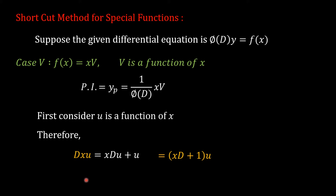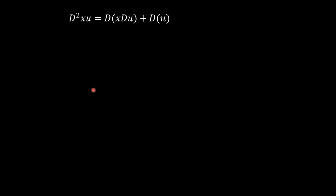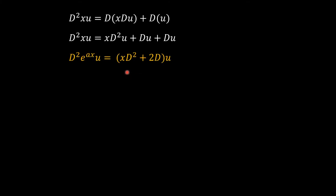We now evaluate the second-order derivative. Consider D²(xu), which equals D[D(xu)] = D[x·du + u]. Operating this operator separately on each term and applying the product rule gives x·D²u + Du + Du. Adding the last two terms, we get (xD² + 2D)u.